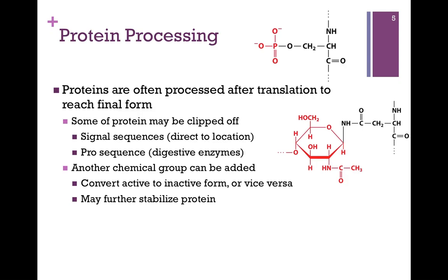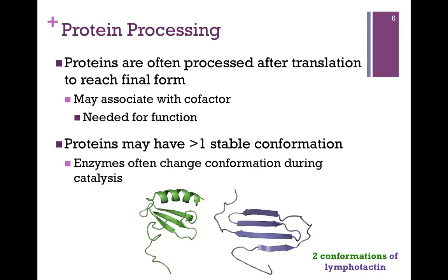Another way proteins can be processed is by adding chemical groups, which can convert them from an active to an inactive form or vice versa. Chemical modifications may also help stabilize the protein or allow it to interact with other components. In the example shown, a phosphate group has been added at the top, and an N-acetylglucosamine has been added on the lower right. Proteins can also be modified after translation by associating with a cofactor for function, an example of which will be seen in chapter five.